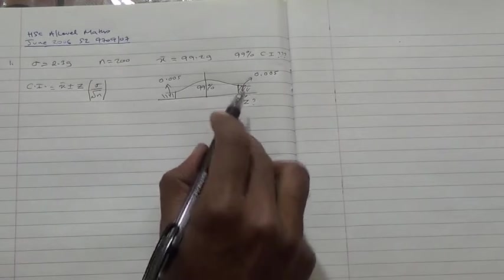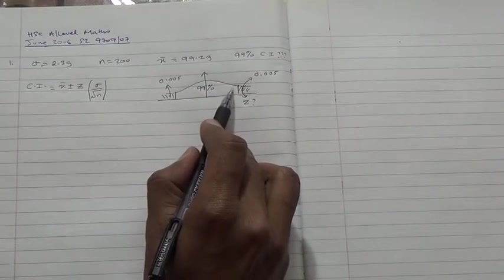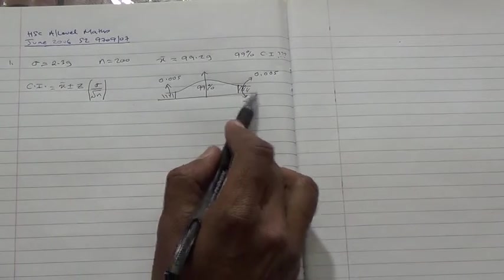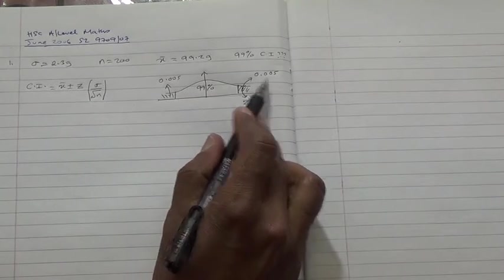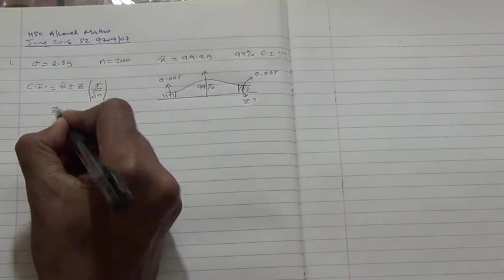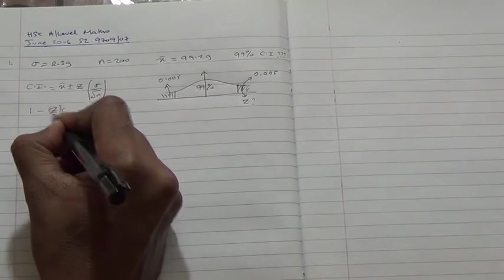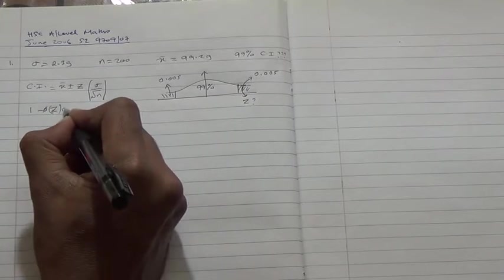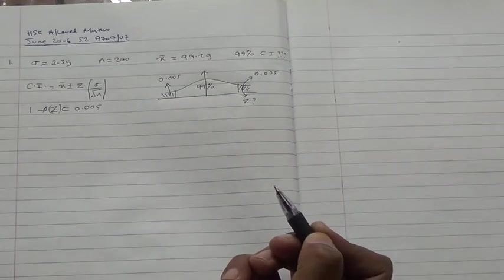So, this here basically, we know that for a normal distribution curve, the area is given to the left of the curve. Therefore, anything to the right would mean that 1 minus what has been given. So, 1 minus to the right. So what we're going to do then, we're going to say the z value, which is basically 1 minus the z value, the phi of the z value is going to be given as 0.005.